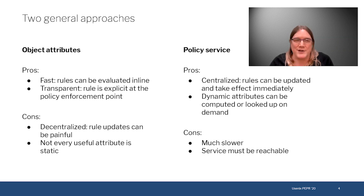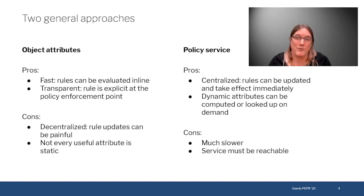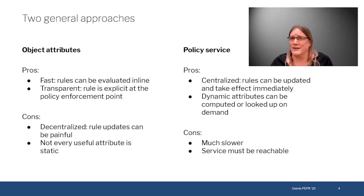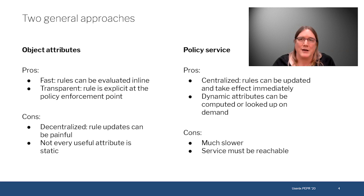These are also the cons. Because it's decentralized, updating one of these rules can be very painful. If the rules are written inline as code, you have to go change all the code if the policy changes. Even across a large codebase with automated tools, this can take a while and you can miss things — ending up with policy consistency problems. Even if you centralize it into a library, you still have to rebuild everything and push new binaries. And not every useful attribute is static; not everything you might want to know about a file or data remains static over the course of its lifetime.